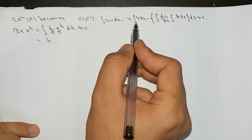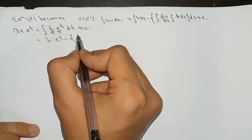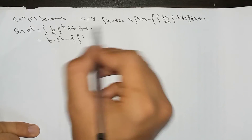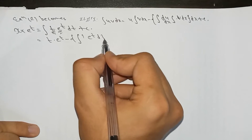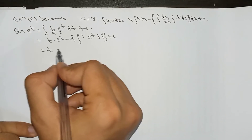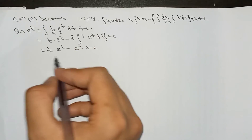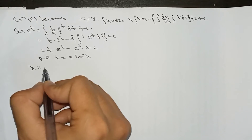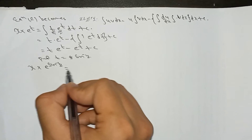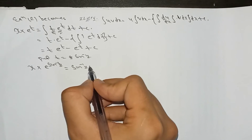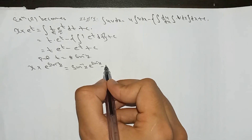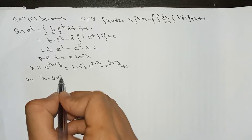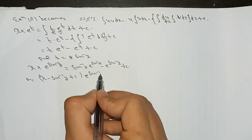Applying the formula: ∫t · e^t dt = t · e^t − ∫1 · e^t dt + c = t · e^t − e^t + c. Substituting back t = sin⁻¹y, equation 2 becomes: x · e^(sin⁻¹y) = sin⁻¹y · e^(sin⁻¹y) − e^(sin⁻¹y) + c.